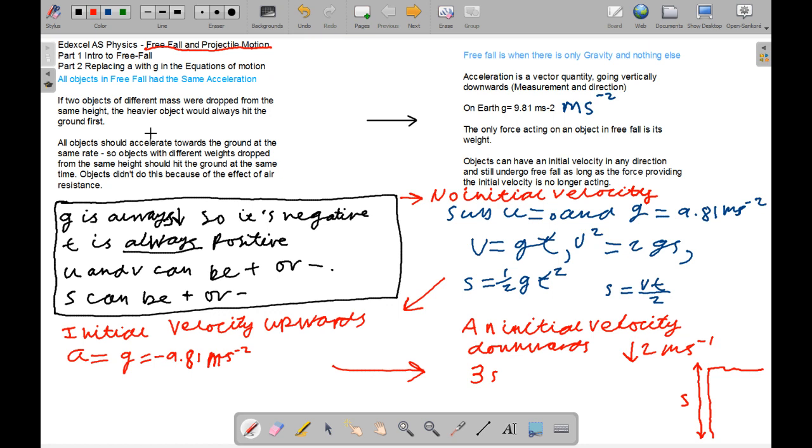And not everything like that, but he thought that the reason this object didn't do this was because of the effect of air resistance on different objects. Now at the time Aristotle thought that two objects of different mass were dropped from the same height then the heavier object would always hit the ground first. It's not true because Galileo proposed that air resistance was key to this.